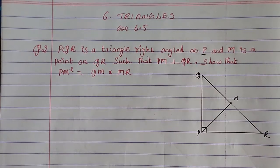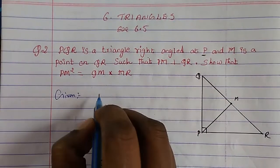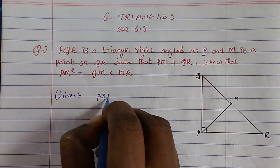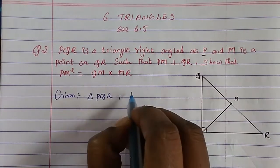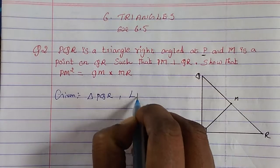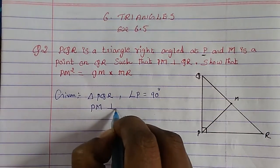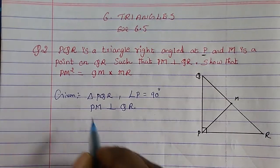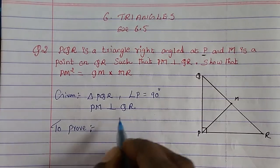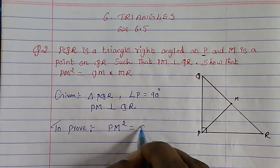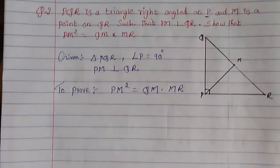Let us write down the things given to us. Given: triangle PQR is a right angled triangle where angle P is 90 degrees, and PM is perpendicular to QR. What we have to prove is: PM squared is equal to QM into MR.